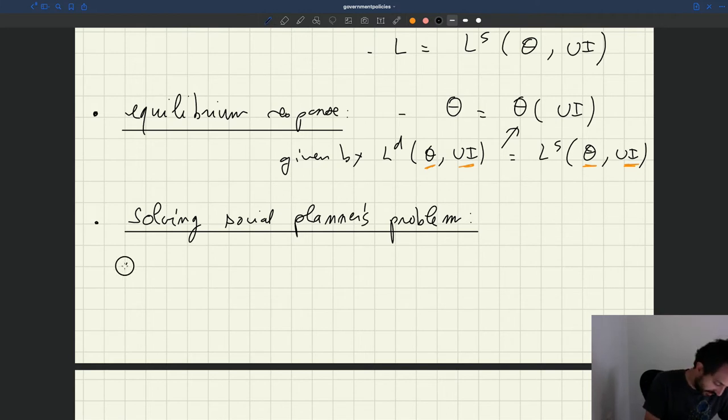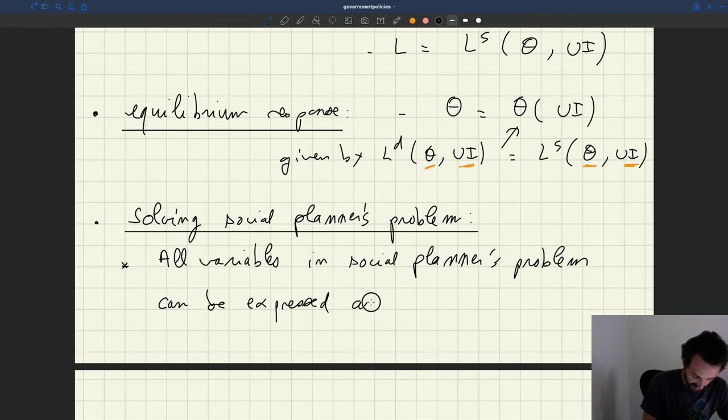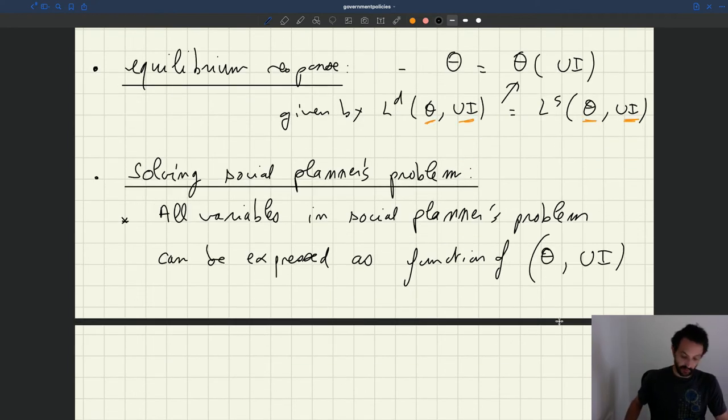The way we do it is that first things you can notice is that in fact all the variables that appear in the social planner's problem, they can be expressed as a function of theta, the tightness, and UI, the policy. That's what you can notice through substitution and through the use of the constraints.